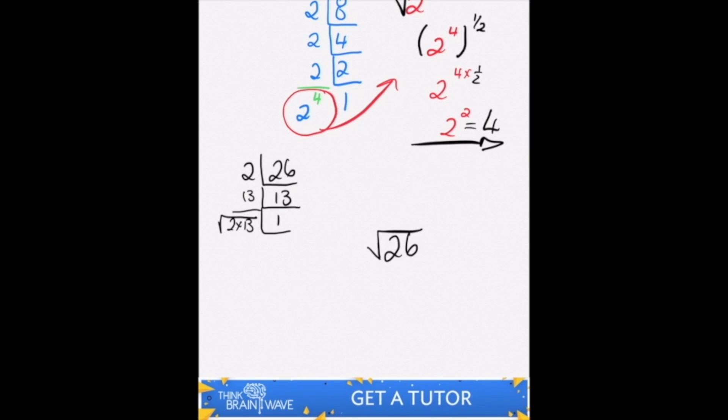Now we can say the square root of 26 is close to the square root of 25. So if we take the square root of 25 we know that that's 5 because 5 times 5 is 25.